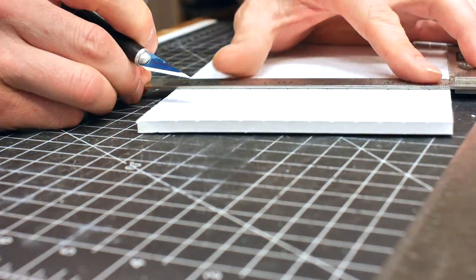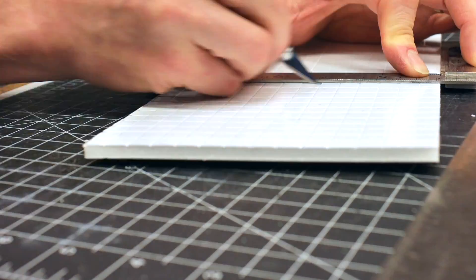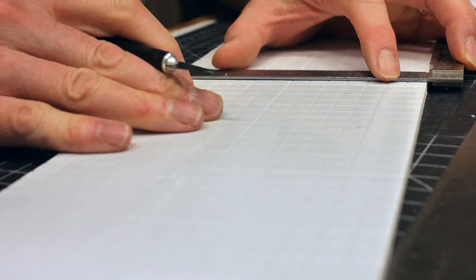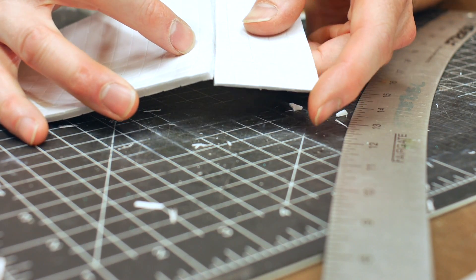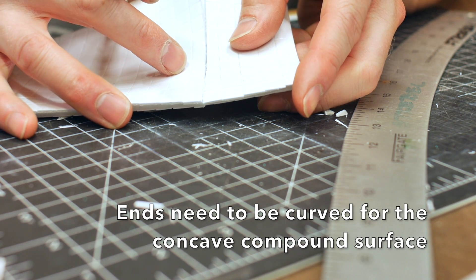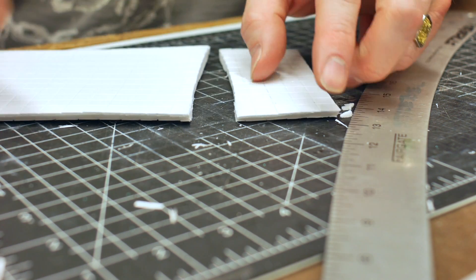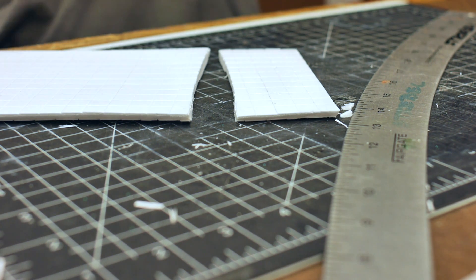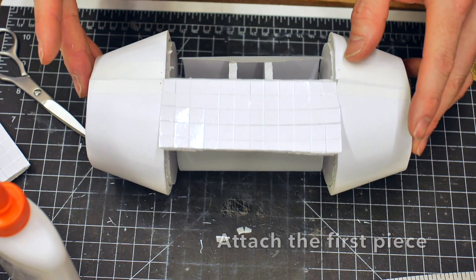Next, we're going to grid up the foam core. I covered this technique extensively in the previous foam core video for making compound surfaces. It's an offset grid on both sides of the foam core and allows the foam core to flex and get you compound surfaces. The ends of the foam core need to be curved because it wraps around a cylinder and it has a concave surface.